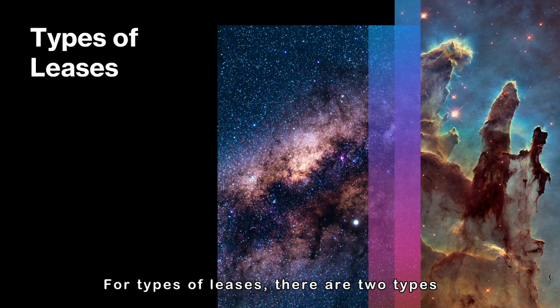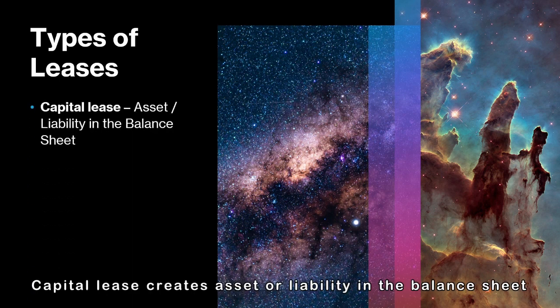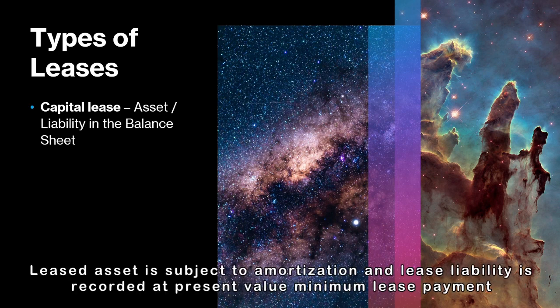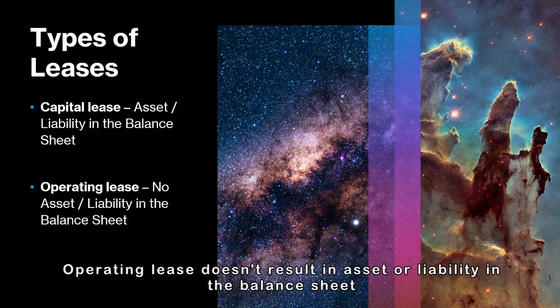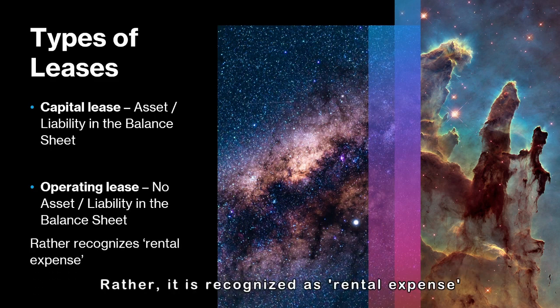For types of leases, there are two types. A capital lease creates an asset or liability in the balance sheet. The leased asset is subject to amortization and lease liability is recorded at present value of minimum lease payments. An operating lease doesn't result in an asset or liability in the balance sheet; rather, it is recognized as rental expense.